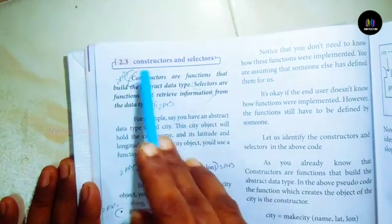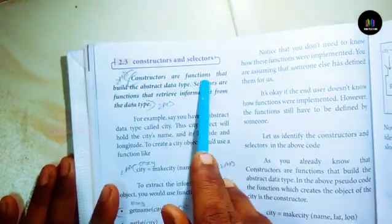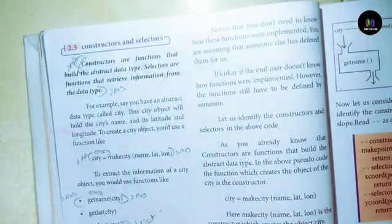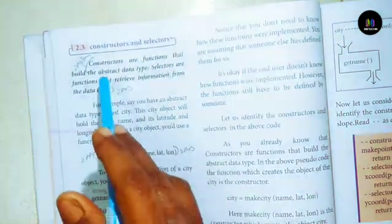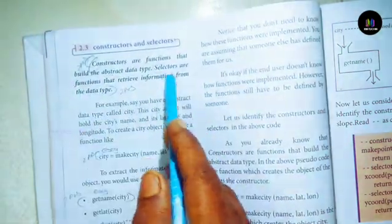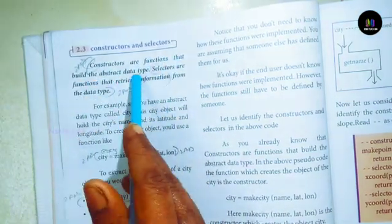Question number 2: Constructors and selectors. Answer: Constructors are functions that build the abstract data type.